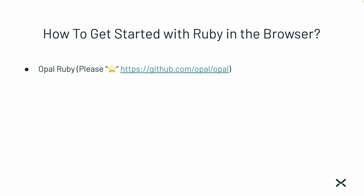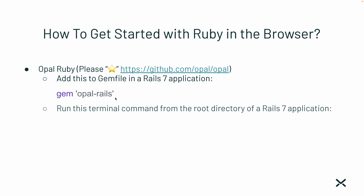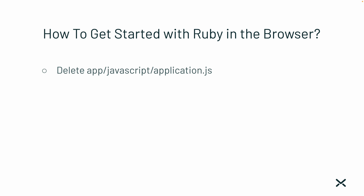We went through a full example using Ruby Wasm. Next, Opal Ruby — please star this project on GitHub at github.com/opal/opal. For Opal Ruby, it gets compiled on the server in the backend. Add this to the Gemfile in a Rails 7 application: gem 'opal-rails'. That will pull in Opal. Then run the terminal command from the root directory of a Rails 7 app: rails g opal:install. That will install basic files needed by a Rails application to support Opal. Next, because we're using Opal Ruby instead of basic JavaScript, we're going to intentionally delete the app/javascript/application.js file that comes with a Rails app and replace it with another one.